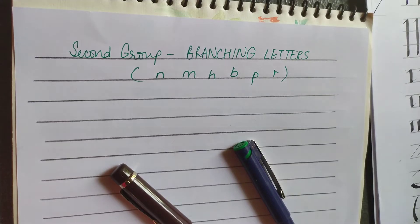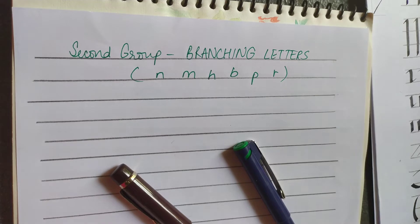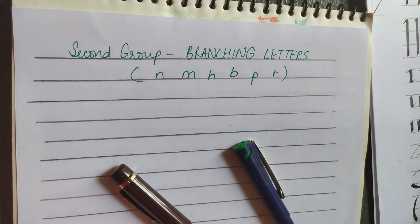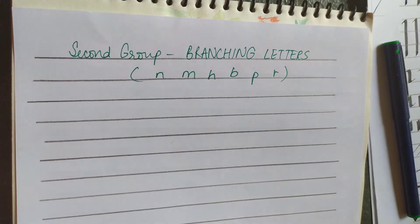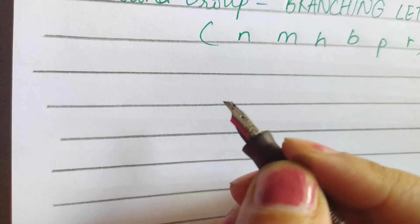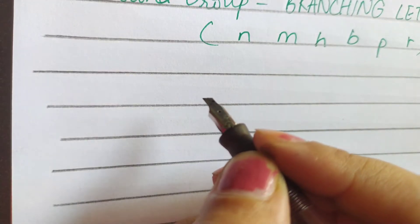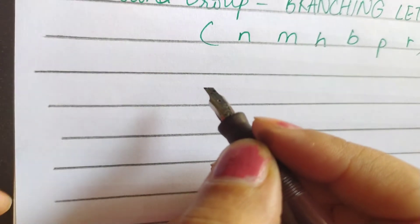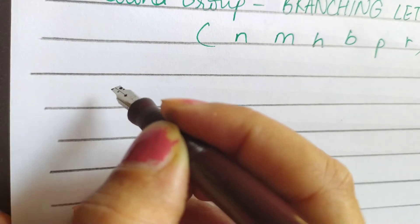Hello everyone, welcome back. Here we go with another video. In this part I am going to discuss the second group, the branching letters. Today we are going to write N, M, H, B, P, and R. I hope you have practiced a lot about the first group. If you have gained enough confidence after doing the first group, today we are going to do our second group practice. We are going to start today with alphabet N. So let's start writing. The rules are same, keep the nib in 45 degree angle and we will start writing our first alphabet, that is letter N.